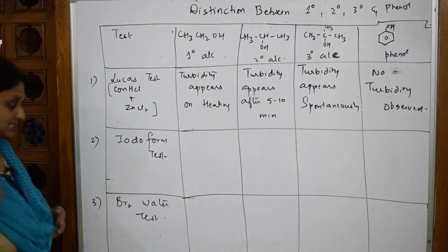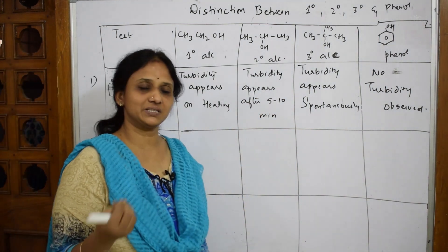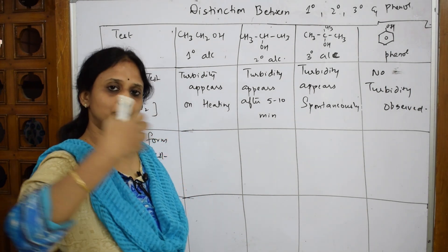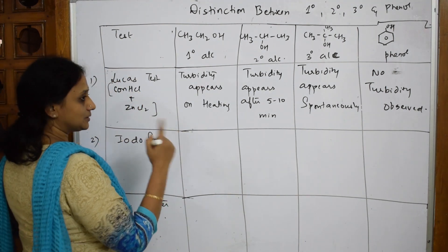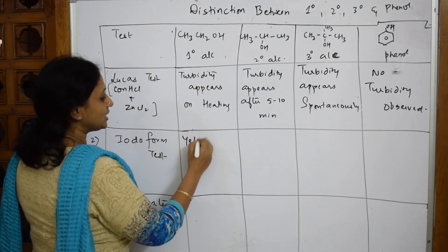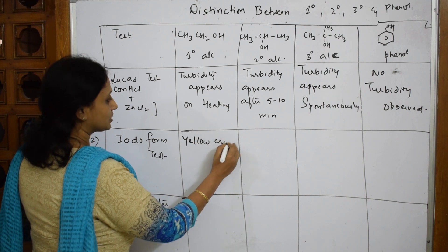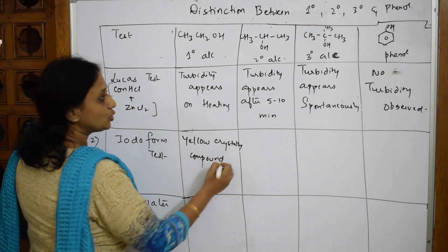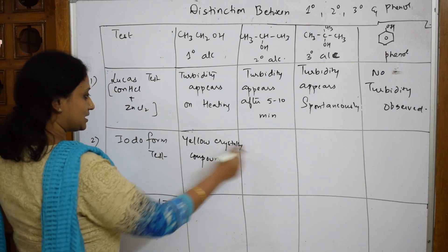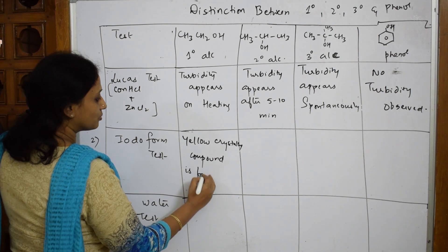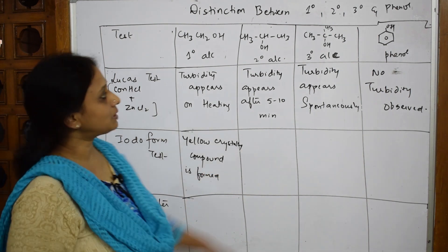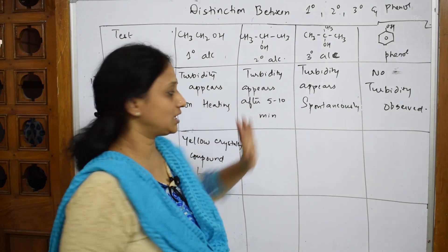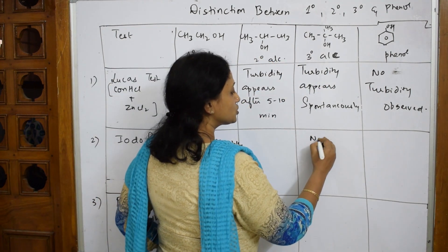The next test is the Iodoform test. As explained earlier, there should be a methyl ketone — an oxygen should be present. For secondary alcohol, you get a yellow crystalline compound. For primary and tertiary alcohols where there's no methyl ketone group, no effect or negative result is observed.